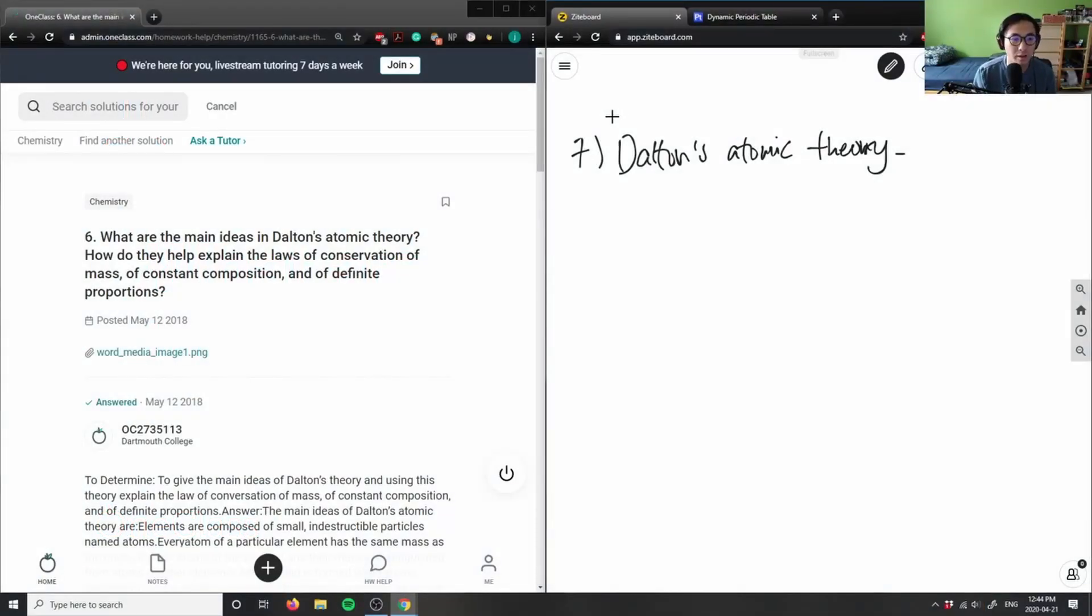They're asking how do they help explain laws of conservation of mass, constant composition, and definite proportions. For this question, I'm actually just looking at the solution because I really don't want to repeat myself.